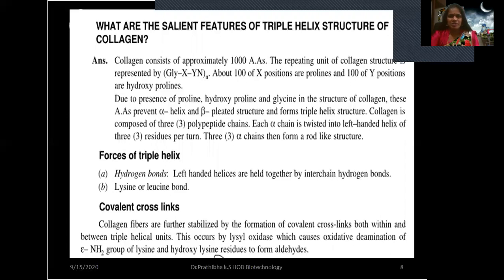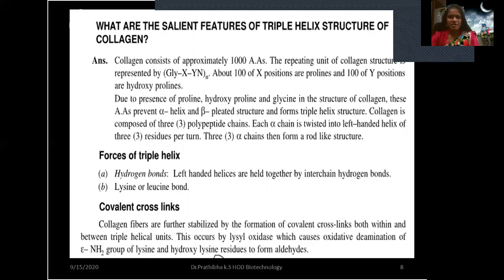What are the salient features of the triple helix structure of collagen? Collagen consists of approximately 1,000 amino acids. The repeating unit is represented by glycine-X-Y-N-N, where about 100 X positions are prolines and 100 Y positions are hydroxyprolines. Due to the presence of proline, hydroxyproline, and glycine, these amino acids prevent alpha helix and beta pleated structure and form the triple helix. Each alpha chain is twisted into a left-handed helix of three residues per turn.